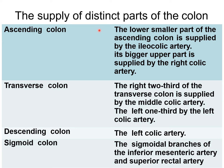About the blood supply of distinct parts of the colon — the ascending colon is supplied by the ileocolic artery (lower part) and the right colic artery (upper part). The right two-thirds of the transverse colon is supplied by the middle colic artery, and the left one-third by the left colic artery. The descending colon is supplied by the left colic artery, and the sigmoid colon by sigmoid branches of the inferior mesenteric artery and the superior rectal artery.